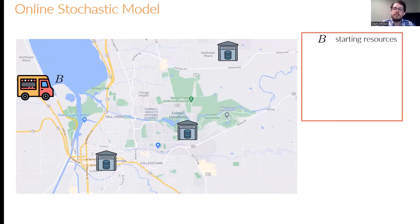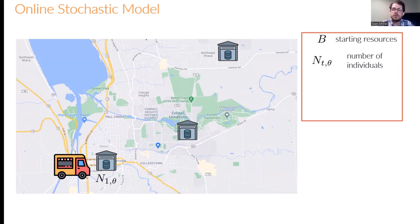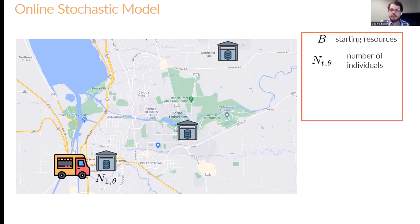Here we have a cartoon-style picture of the model setup, where the background is a screenshot of Ithaca, New York. On the left-hand side, we have a truck loaded up with a fixed amount B of starting resources. The truck then travels to the first distribution location and observes a vector N1 theta, where theta corresponds to an individual's type. This type could encompass things like whether they are vegetarian, the family size, and so on. For example, the food truck could observe three vegetarian individuals, a vegetarian family of size 4, a family of size 6, and so on.